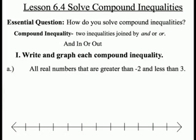The first part: write and graph each compound inequality. All real numbers that are greater than negative 2 and less than 3. All real numbers — that's a variable x — greater than the greater-than sign, and less than the less-than sign. We notice these are separated by the word 'and,' so this is going to be a compound inequality using the word 'and.'